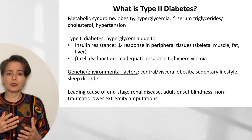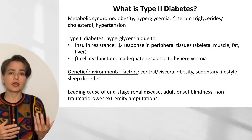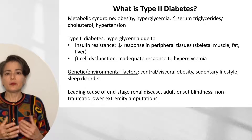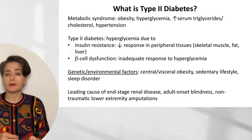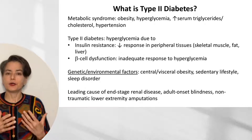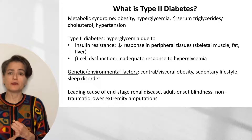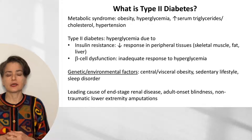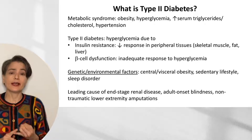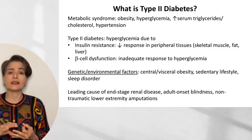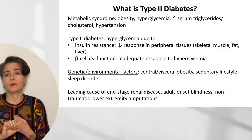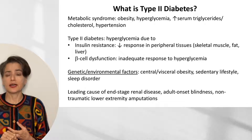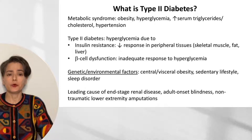We talk a lot about genetic predisposition in type 1 and type 2 diabetes. In type 2, even though the genetic association is stronger than in type 1, a much greater impact is due to environmental factors: central/visceral obesity, sedentary lifestyle, and to a lesser extent, sleep disorders. Type 2 diabetes is critically important because it is a leading cause of end-stage renal disease, adult onset blindness, and non-traumatic lower extremity amputations — a true crisis in our country.